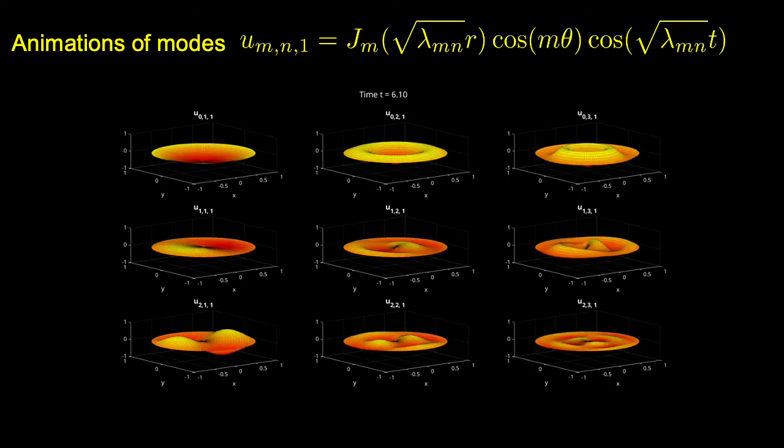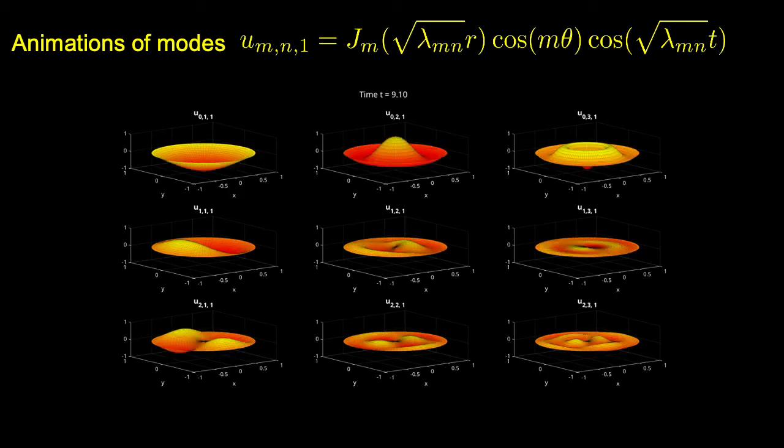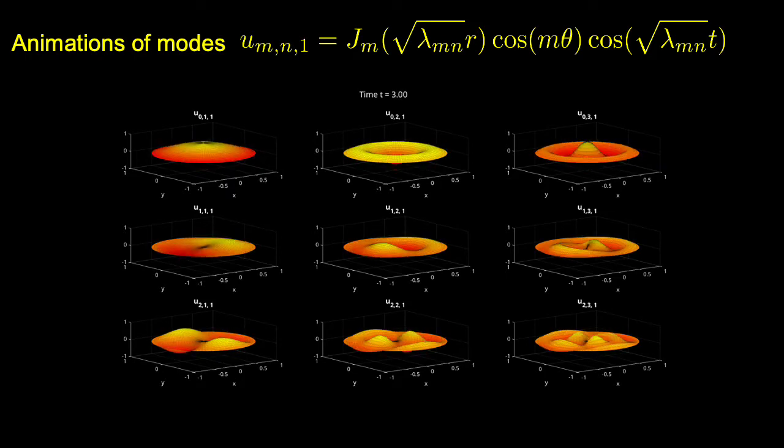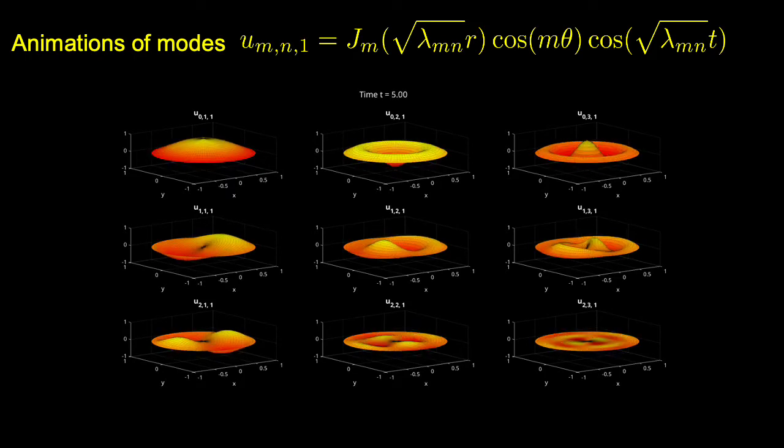The mode indexed by m and n has 2m nodal radii and n-1 nodal circles, excluding the boundary circle.